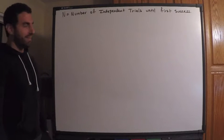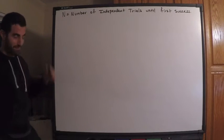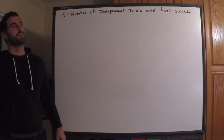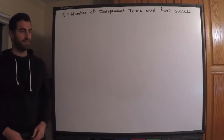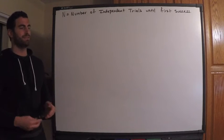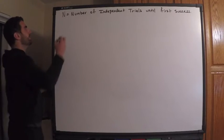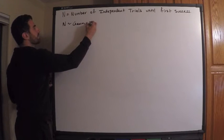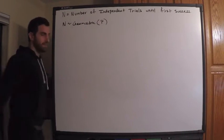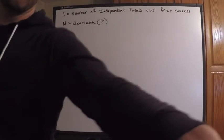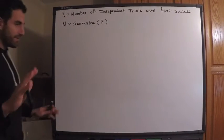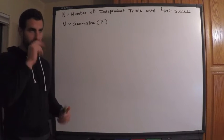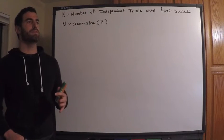Here is my random variable: the number of independent trials until the first success — just a generic random variable. Hopefully if you've been studying any kind of probability you know what this is. This is the geometric random variable. So N is distributed geometric; the only parameter is p, the probability of success. There are a couple things I want to lay out: the cumulative distribution function, the survival function, and the memoryless property of the geometric distribution.